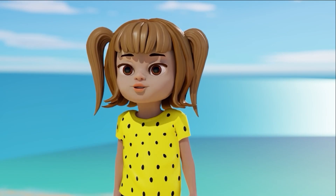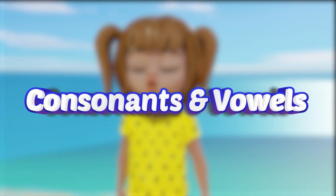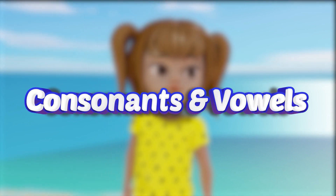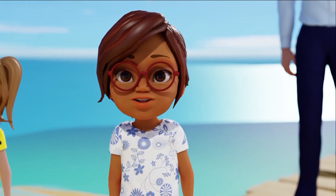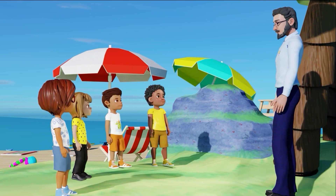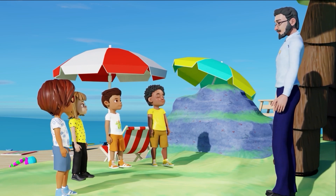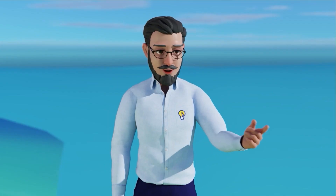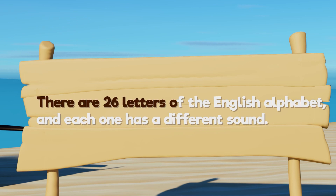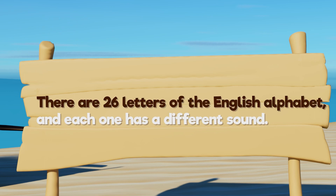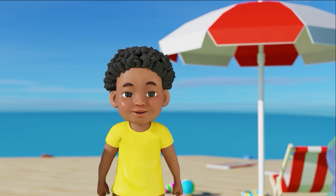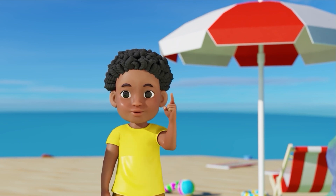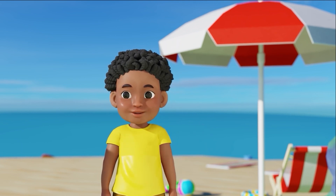Let us first quickly revise the consonants and vowels before we move to the treasure hunt zone. Yes, I don't want to get under a spell again. Great. Let's revise before entering the zone. You all know that there are 26 letters of the English alphabet, and each one has a different sound. Yes, we practiced the sounds of each letter when we revised the letters with Crawley the caterpillar.